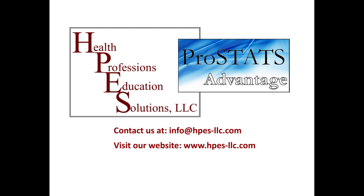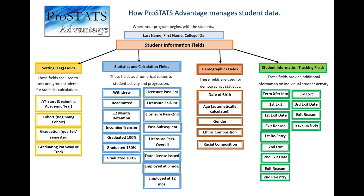Welcome to a demonstration of ProStats Advantage from Health Professions Education Solutions. ProStats Advantage works by using a series of fields attached to the student name to sort students into beginning academic year, beginning cohort, graduation cohort, and graduating pathway or track. The statistics and calculation fields, using a series of checkboxes, add a numerical equivalent to the student's progression in the program. The demographic fields maintain demographic information for each student and calculate student demographics by cohort. The student information tracking fields provide additional information regarding the student's time in the program.